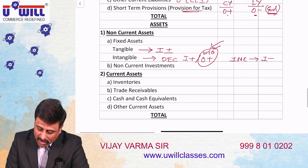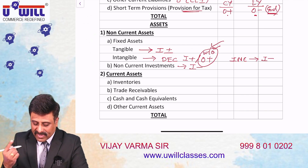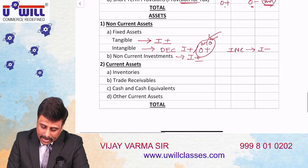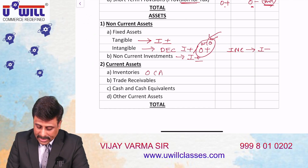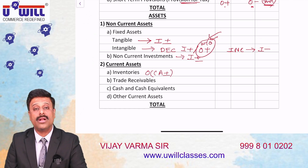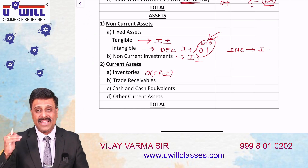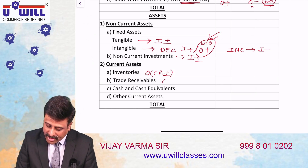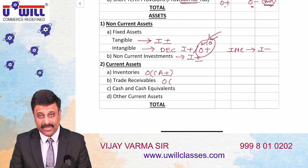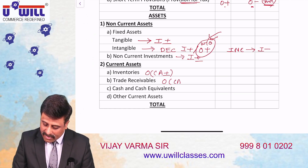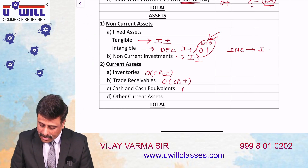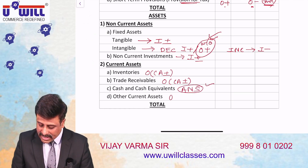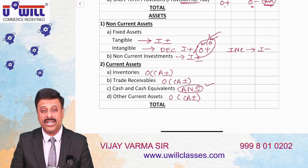Non-current investments always affect investing activities: sale of investments is I+, purchase of investments is I−. Inventories affect operating activities with inverse relation (CA+ or CA−): if inventories increase, we minus; if they decrease, we add. Trade receivables also affect operating activities with inverse relation. Cash and cash equivalents will be our final answer. Other current assets also affect operating activities with inverse relation.